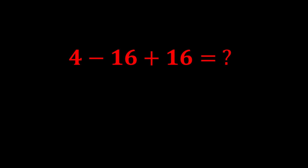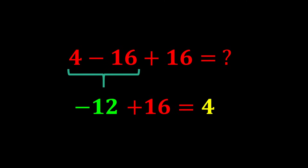Now, in this expression we have both subtraction and addition. Since they have equal priority, we move from left to right. 4 minus 16 equals negative 12, and finally negative 12 plus 16 equals 4.